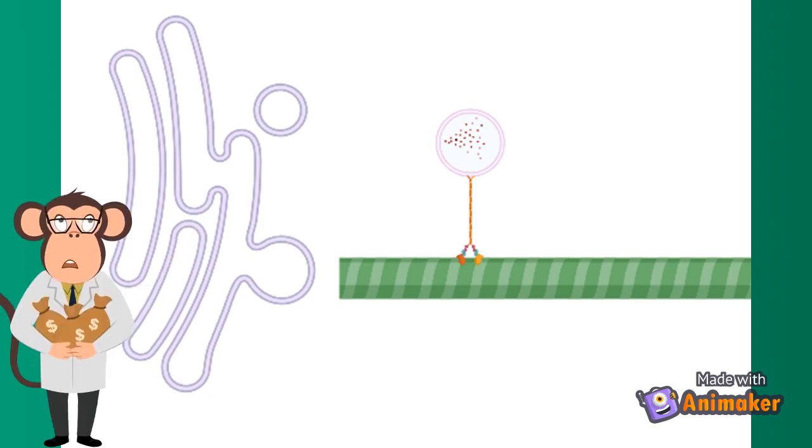A scaffolding protein called RIM is important for getting the vesicles near a voltage-gated calcium channel. RIM connects to a vesicle protein called RAB3. This ensures that the vesicle is in range of incoming calcium ions.